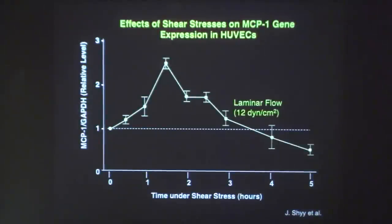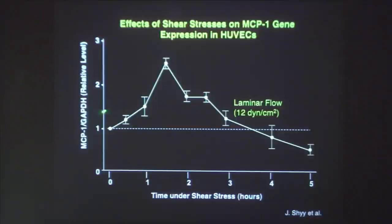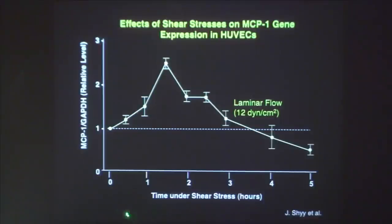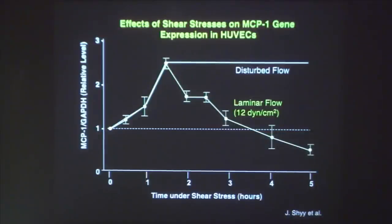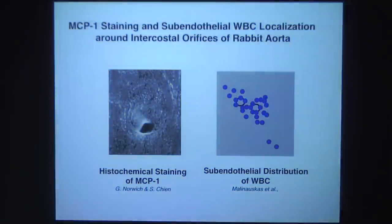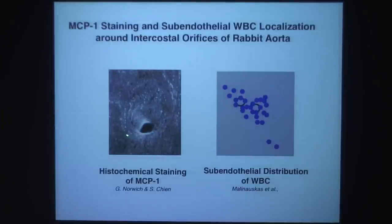Looking at MCP-1 secretion at the mRNA level: with shear it goes up to more than twice the control in about one and a half hours, but with sustained shearing the expression of MCP-1 goes down — it is transient. In contrast, disturbed flow keeps MCP-1 elevated. At the protein level in vivo, MCP-1 expression is primarily at the branch point near the intercostal artery, and white blood cell adhesion is also near the branch point.